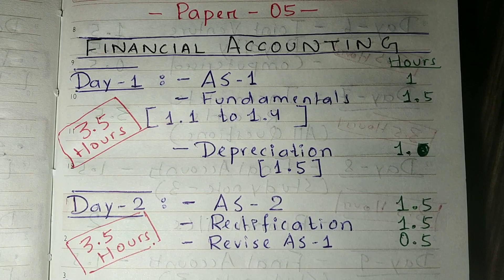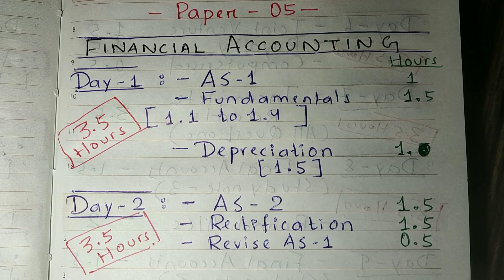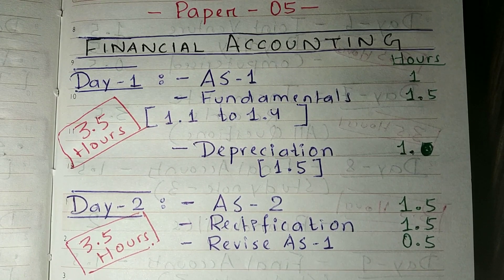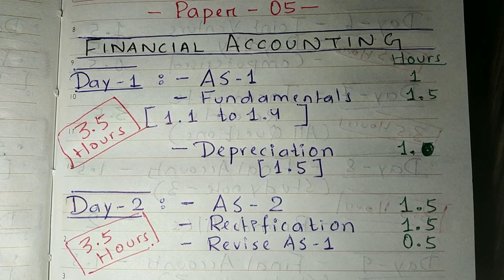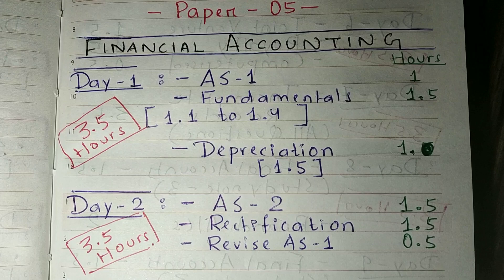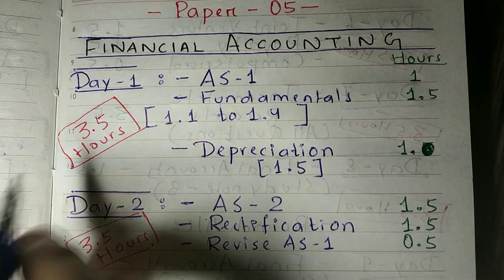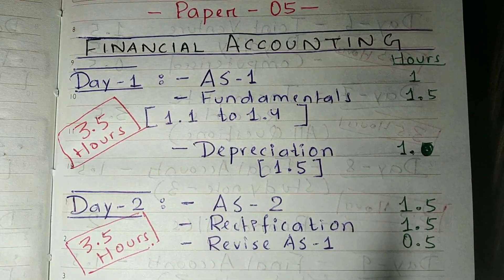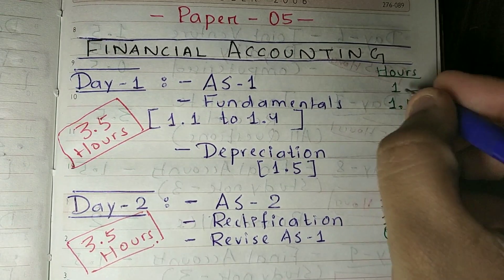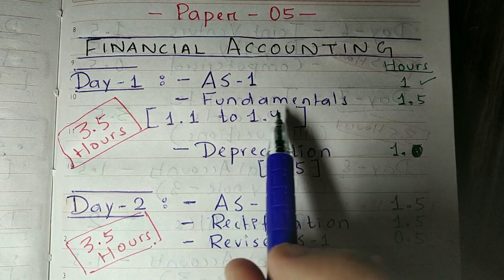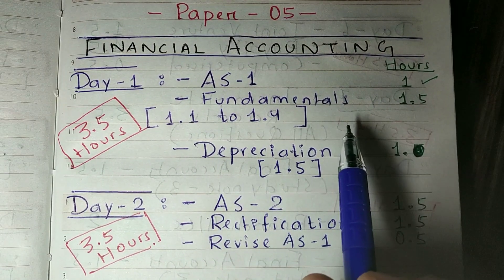Along with AS-1, you have to do related MCQs, theory, and concept questions. If you have a scanner, RTP, MTP, or workbook, you should do any questions related to accounting standards. Accounting Standard 1 will take you a maximum of one hour. After that, you have to learn Fundamentals of Accounting, which is Study Note Number 1.